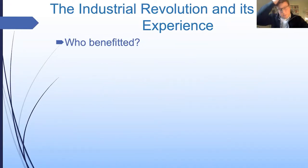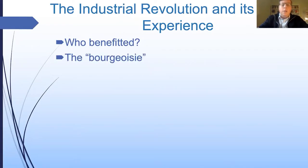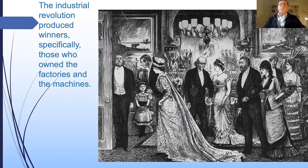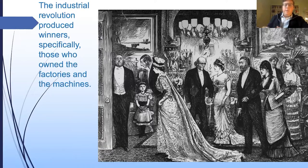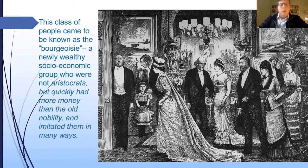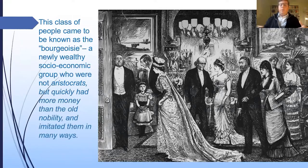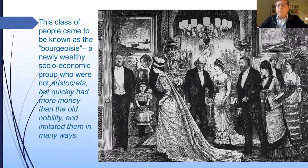It was awful for many people, but obviously very good for some. The people who benefited were called the bourgeoisie — the winners of the Industrial Revolution. These were the people, their families, and associates who owned the factories and machines or invested in them. They were what we call new money, and they very quickly surpassed old money — the old established aristocracy, the noblemen and women who owned castles. But castles don't make money the way factories do, so the bourgeoisie quickly adopted the habits of the aristocracy: fancy dresses, fancy dinners, and so on.